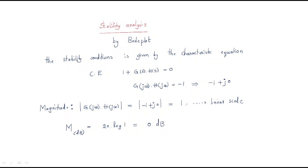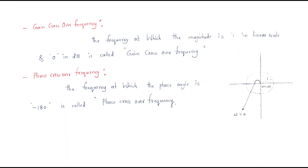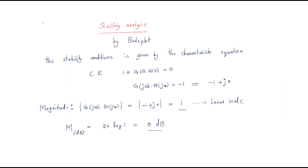So in order for the system to be stable, the magnitude must be 1 in linear scale or 0 dB in decibels.